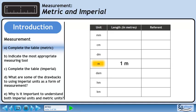The meter is the base unit for metric measurements. A referent is something you can use to estimate the approximate size of a unit. One possible referent for a meter is the distance from the floor to the doorknob.